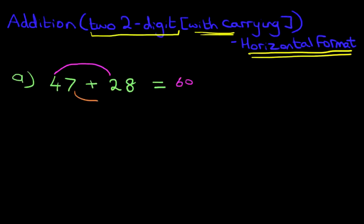Then we're going to add the units. We've got seven plus eight. What is seven plus eight? You should know this. Seven plus eight is 15. So now you can do this. 60 plus 15 is 75. So 47 plus 28 is 75. So we're doing in a two-step process.